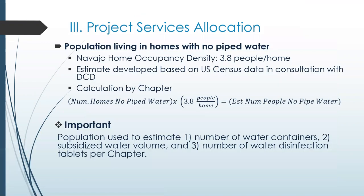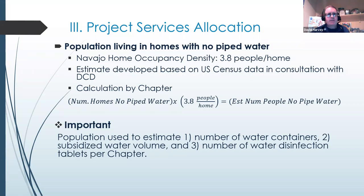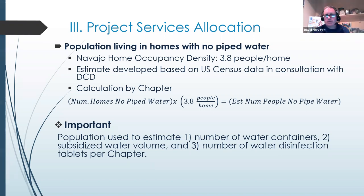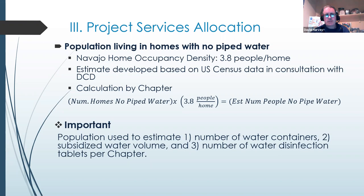We provided a paper map as an example of how the services are estimated, but some of that information may not be accurate, so we're looking for chapters to help improve upon that and be in the driver's seat of defining the need so that IHS can assist the tribe in addressing it. The dots on the map represent homes that were assumed to be without piped water, with color coding based on chapter boundaries showing the number of homes in each chapter.